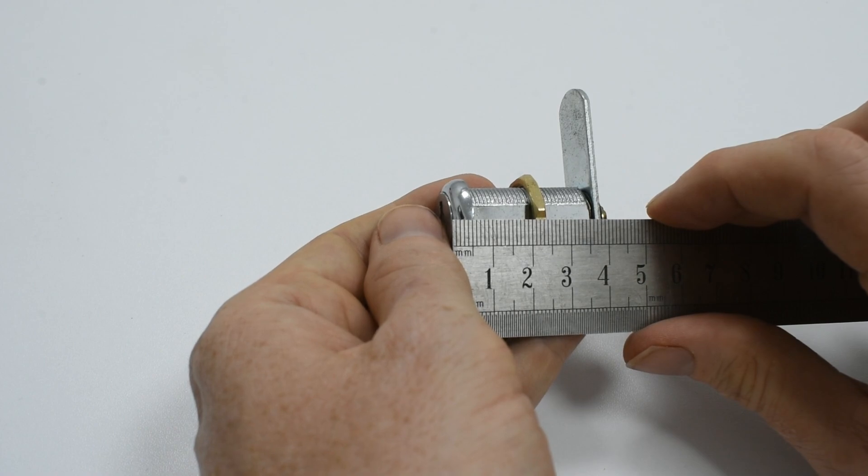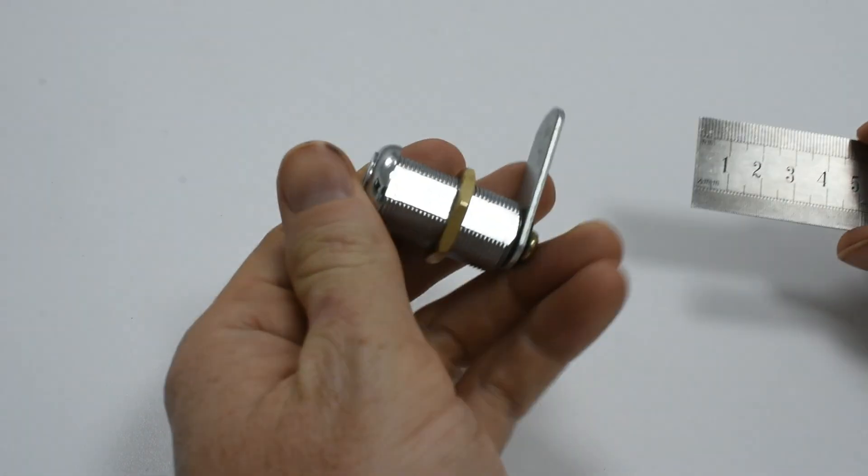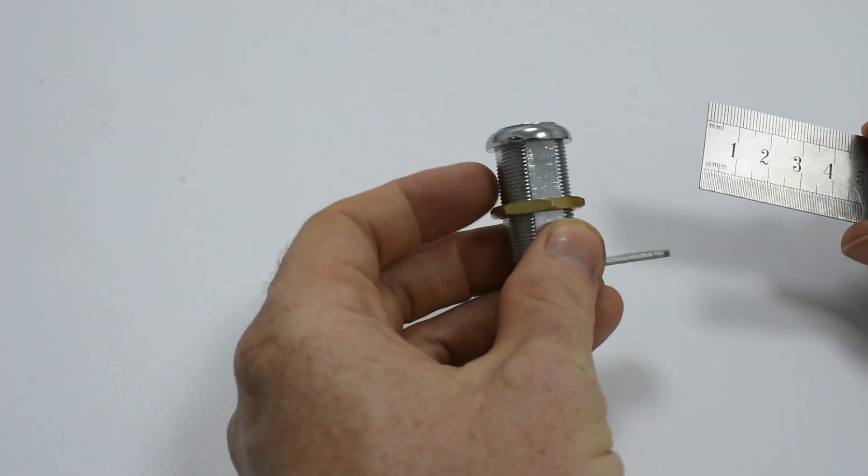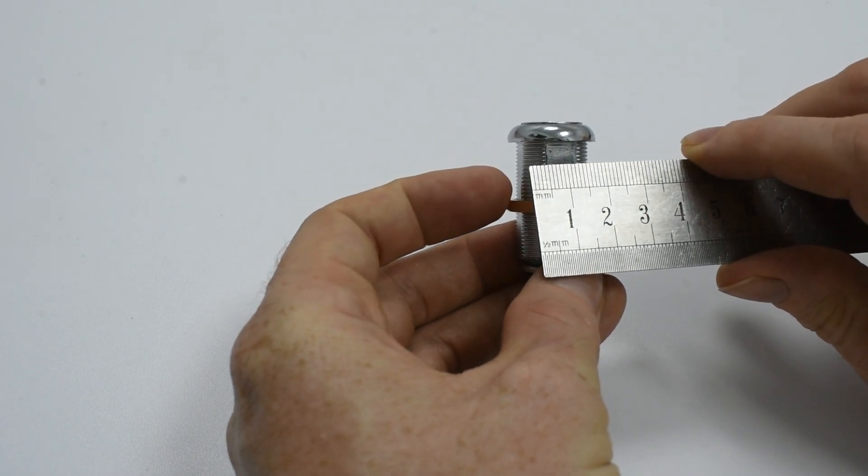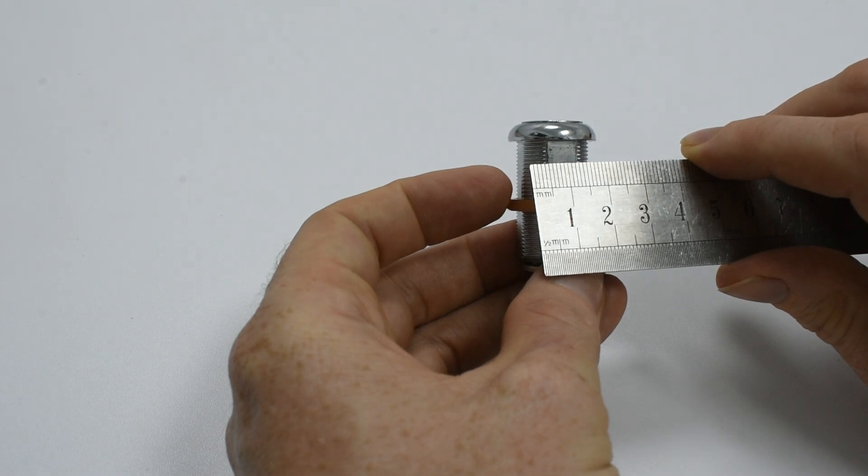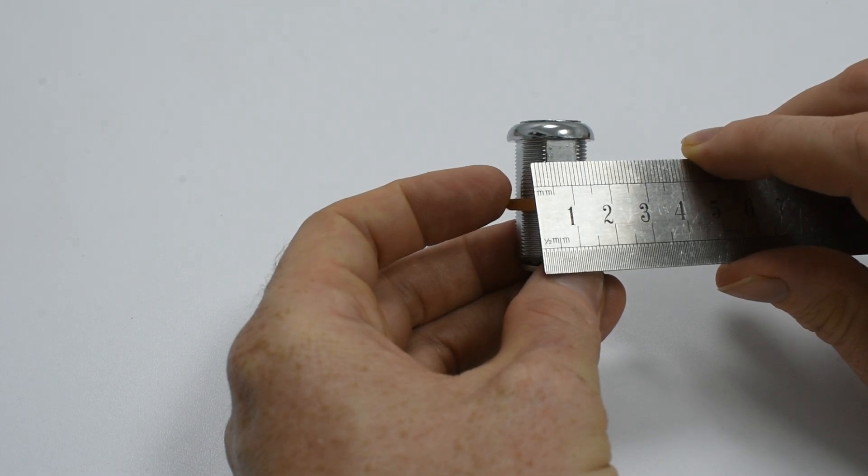The next would be body height. The body height is a measurement across the body at its widest point or across the threads. In this case, just under 20 millimeters. This is officially quoted as 19 millimeters.